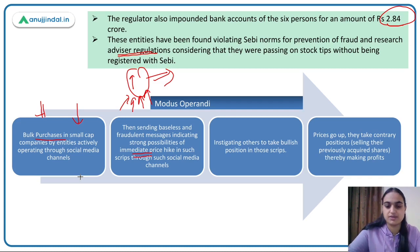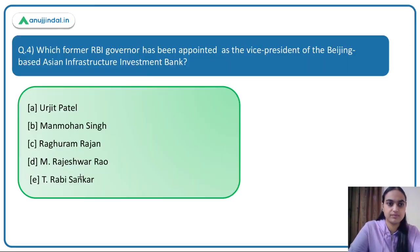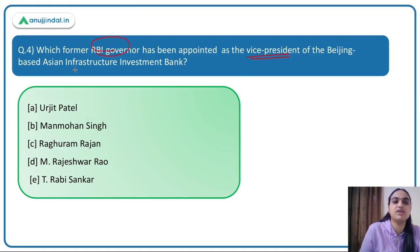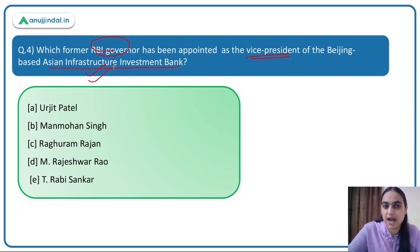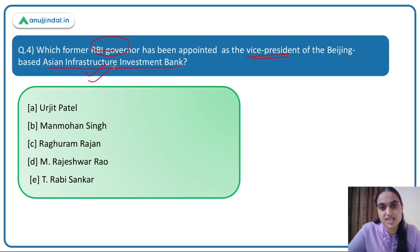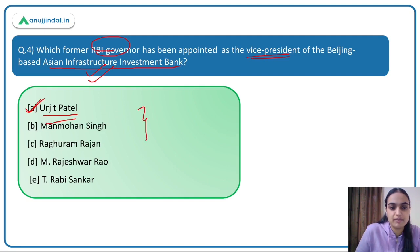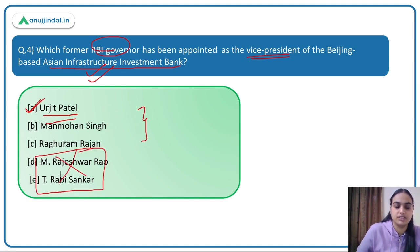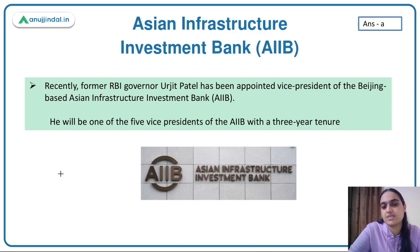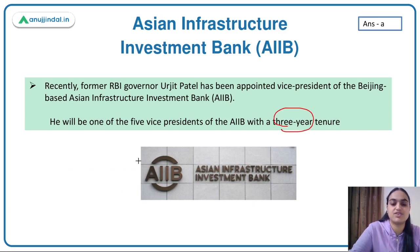The next question: which former RBI governor has been appointed as Vice President of the Beijing-based Asian Infrastructure Investment Bank (AIIB)? The answer is option A — Mr. Urjit Patel. The other options are either former deputy governors or other former governors. Mr. Urjit Patel has been appointed as Vice President for a three-year term at the AIIB.